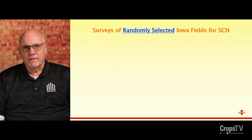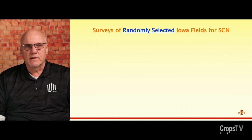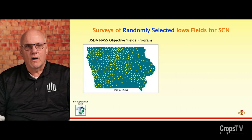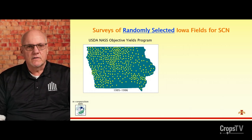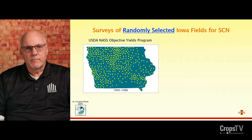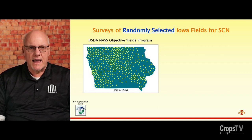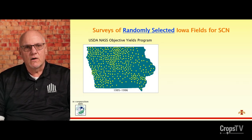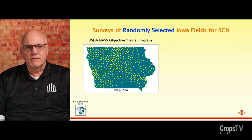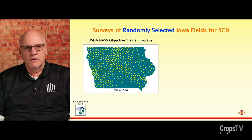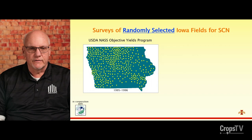Before one can manage a pathogen, you have to know where it's at. I've been at Iowa State since the early 1990s, and three times over the last three decades we've conducted a random survey of fields in Iowa to test for soybean cyst nematode. A random survey requires real effort — not just picking fields from a gravel road. We used a computer to select fields based on where soybeans are grown, partnering with USDA's National Ag Statistics Service and their Objective Yields Program.